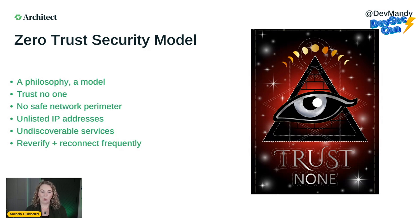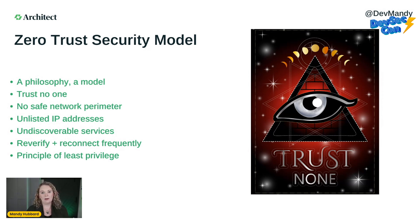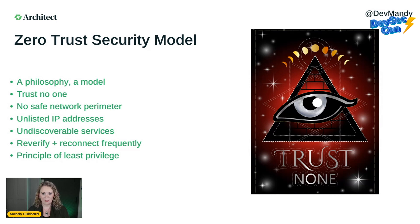There will be periodic reconnect and re-verify efforts so that if someone does infiltrate a particular resource, they don't automatically get access to every other resource it has access to — because there will be a reconnect and re-verify process that an attacker won't be able to get through. Zero trust security focuses on the principle of least privilege, which simply means your resources should have the absolute bare minimum privilege and permissions necessary to do their jobs.